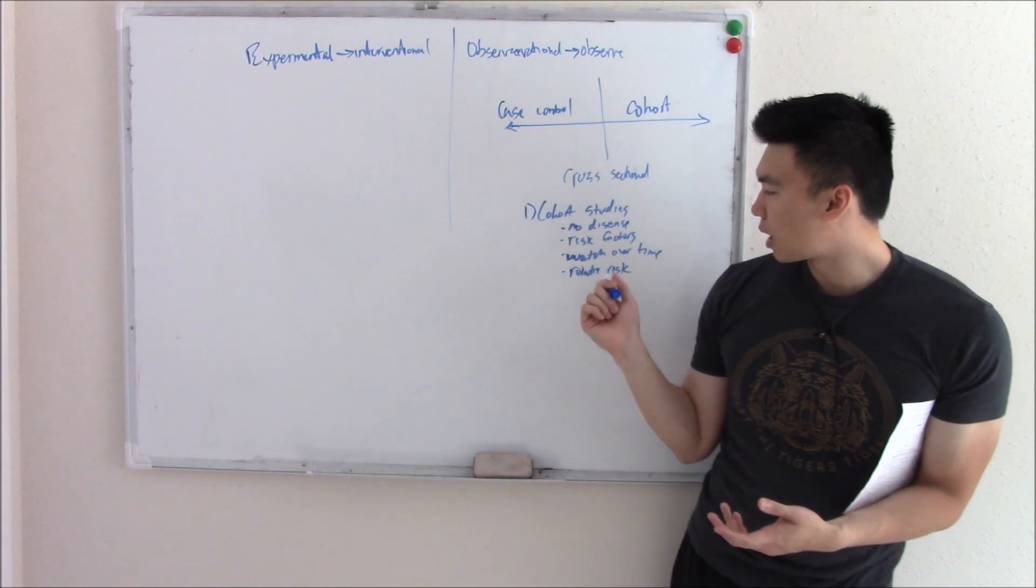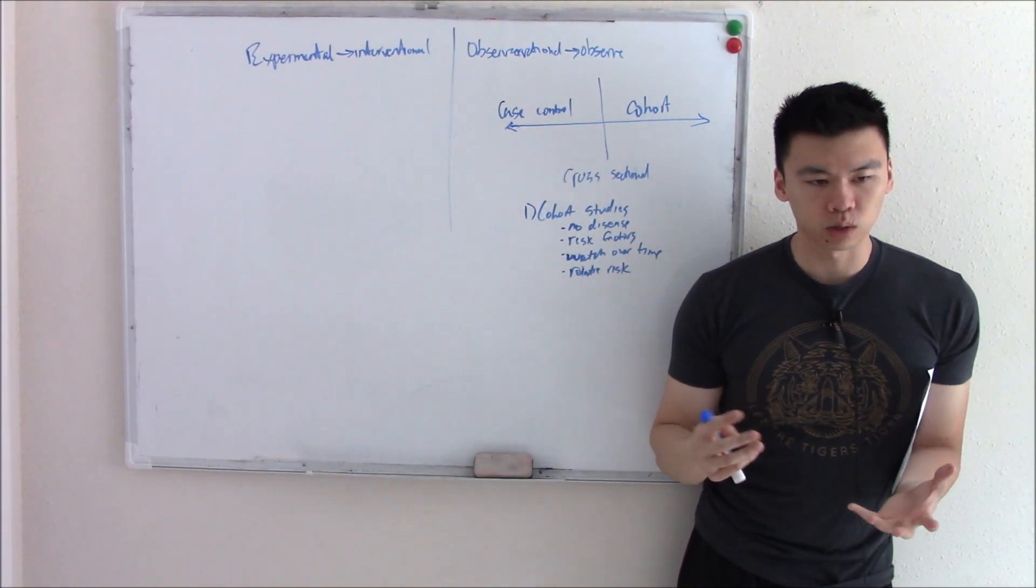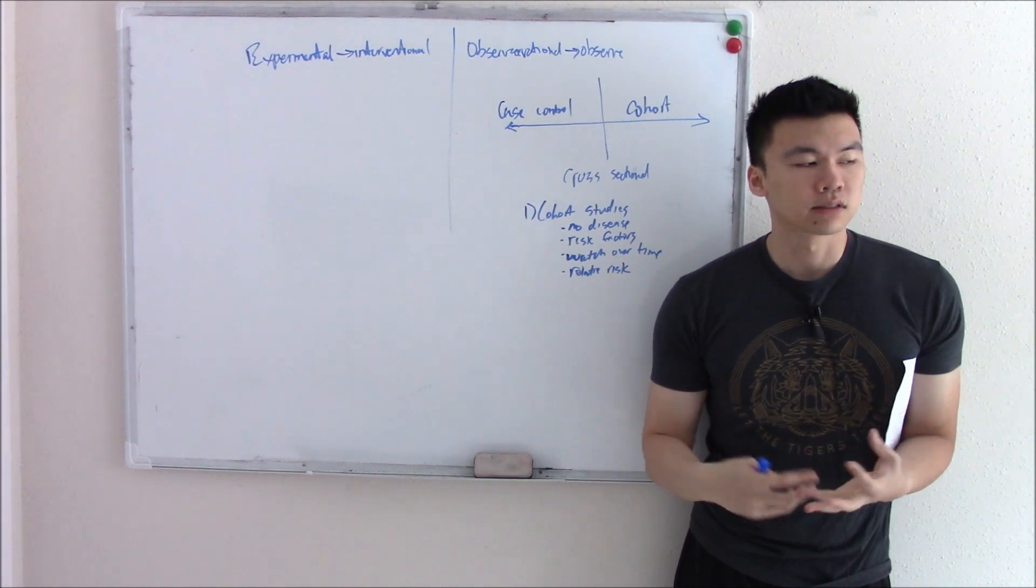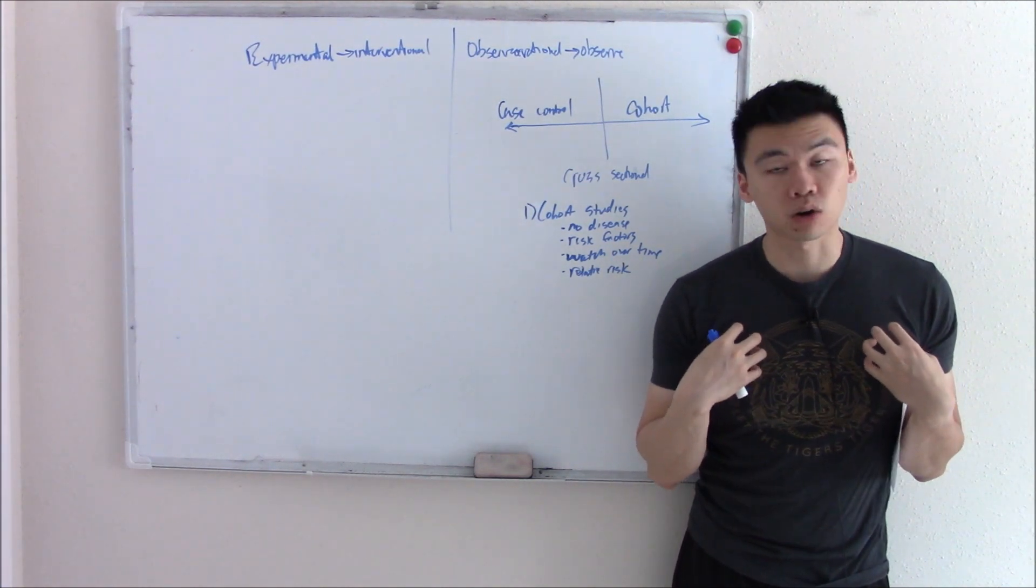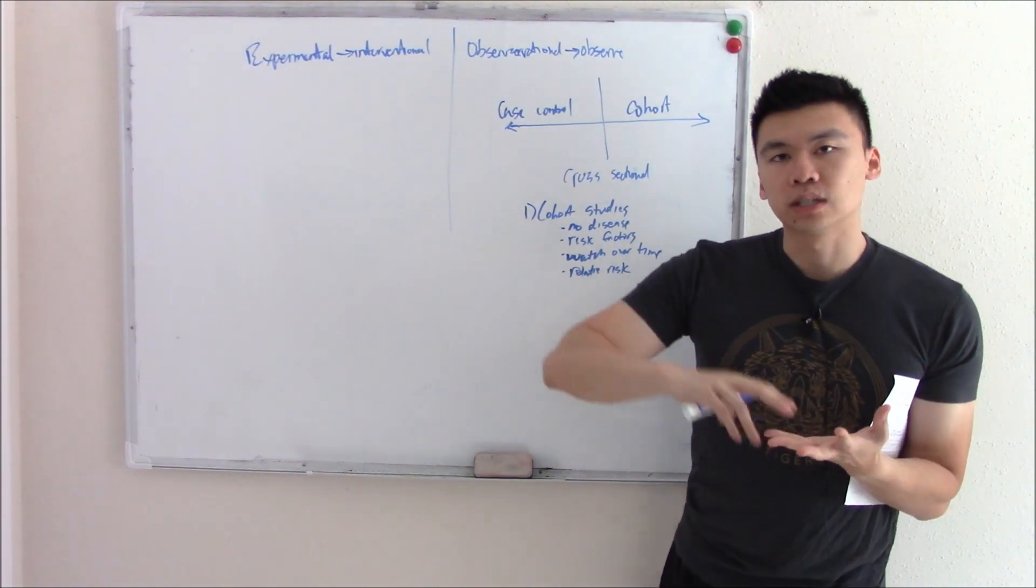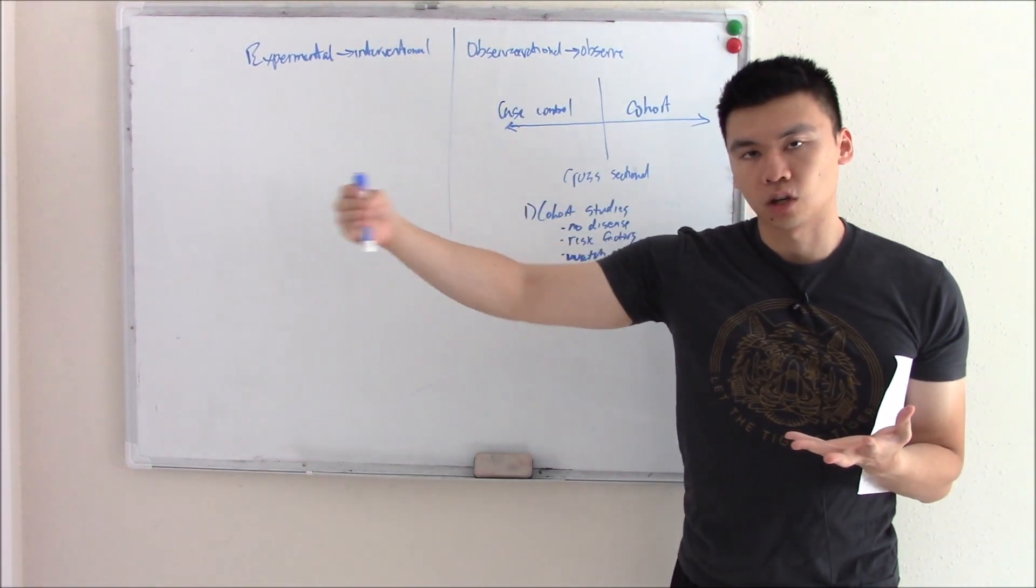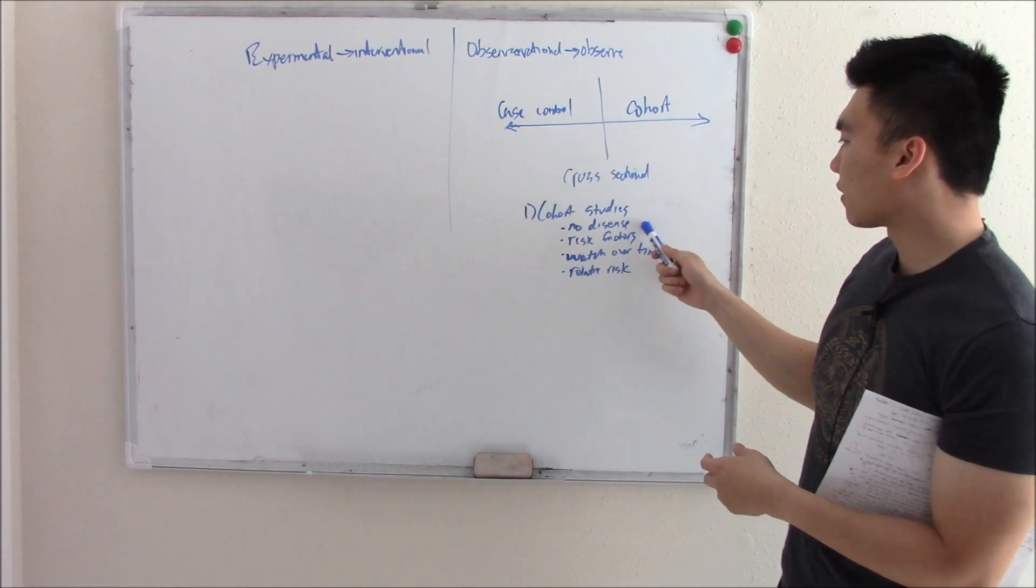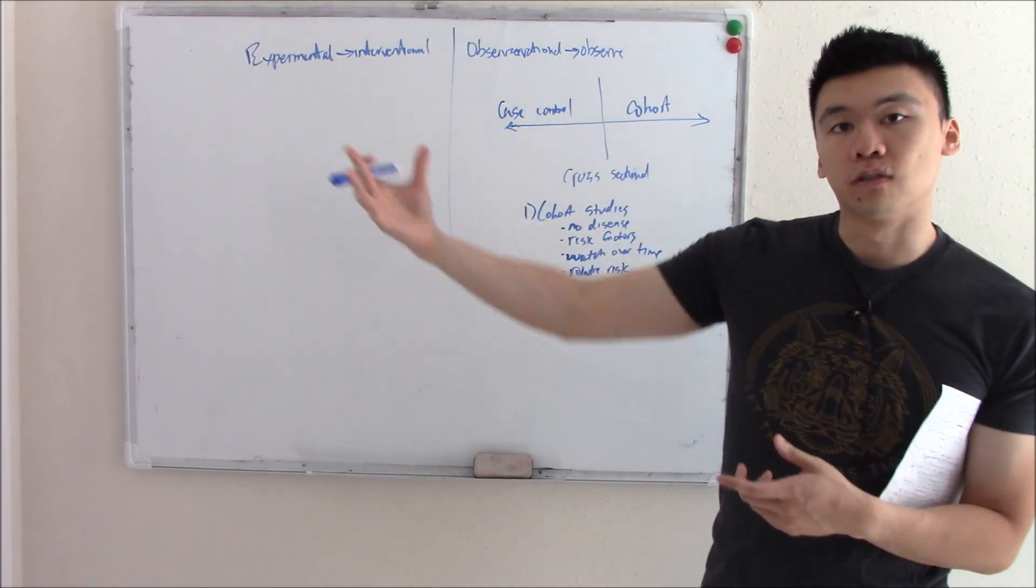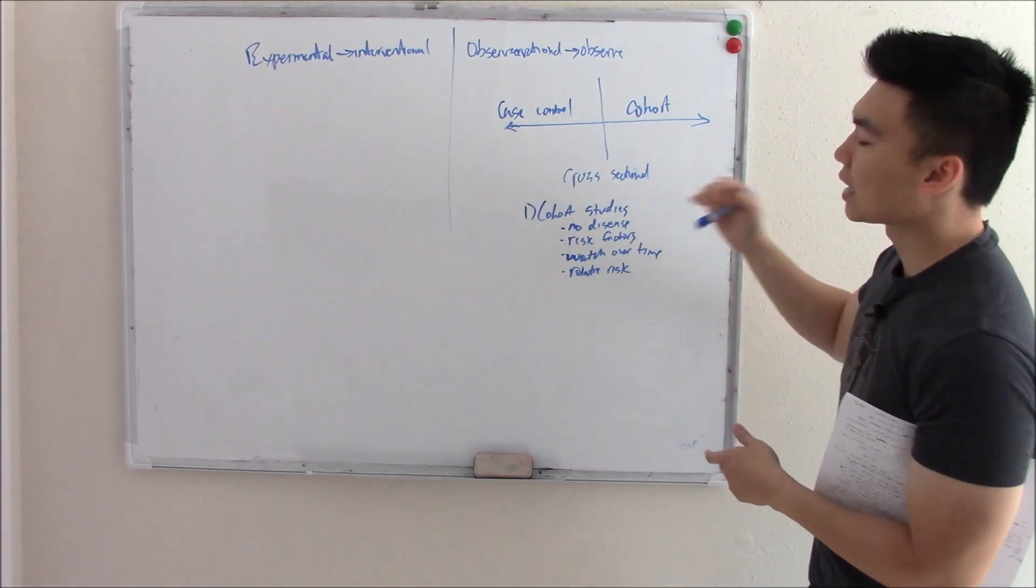How important is this risk factor relative to people that don't have that risk factor? The way I memorize relative risk is when I think of relative, I think of family, and I think of family history. If someone has a family history of myocardial infarctions, they don't currently have a heart attack, but they're at an increased risk of developing a heart attack. They don't currently have the disease, but they have risk factors and can develop it over time.